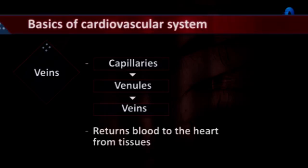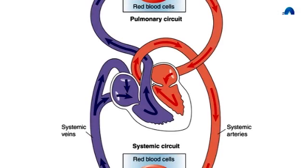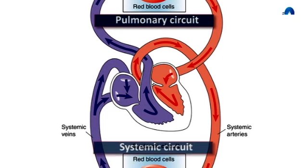Broadly speaking, the heart is broken into two separate circuits: the pulmonary circuit and the systemic circuit.